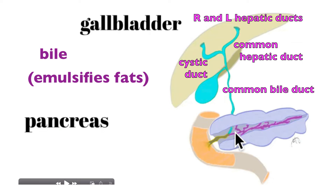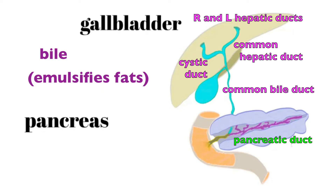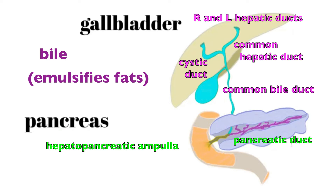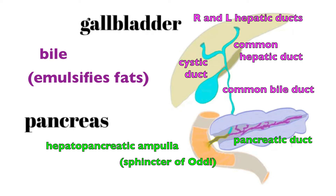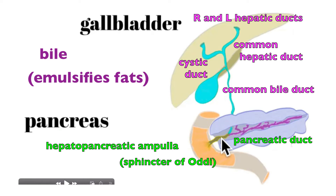The bile duct meets up with the pancreatic duct running down the center of the pancreas. The two join into a chamber called the hepatopancreatic ampulla, within which there is a sphincter known as the sphincter of Oddi that regulates the release of bile and pancreatic juices. Someone without a gallbladder is still okay because the liver continuously produces bile, and the sphincter of Oddi controls release of bile into the duodenum.